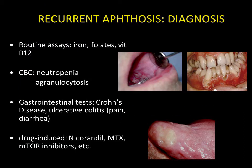An explanatory factor must be sought for recurrent aphthosis. A laboratory workup must be run with systematic iron, folate, and vitamin B12 assays. A complete blood count must be performed, particularly to investigate neutropenia and agranulocytosis, as aphthosis lesions are complications of these conditions. A gastrointestinal workup must be conducted, centred on the history-taking to research symptoms such as pain after meals and diarrhoea, which can raise suspicions of chronic inflammatory bowel disease.